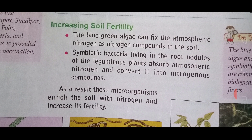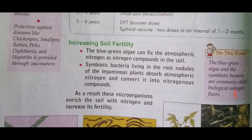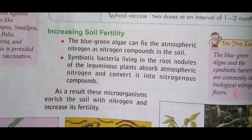Increasing soil fertility: the blue-green algae can fix atmospheric nitrogen as nitrogen compounds in the soil. Symbiotic bacteria living in the root nodules of leguminous plants absorb atmospheric nitrogen and convert it into nitrogenous compounds. As a result, these microorganisms enrich the soil with nitrogen and increase its fertility. This is how microbes are used to increase soil fertility.